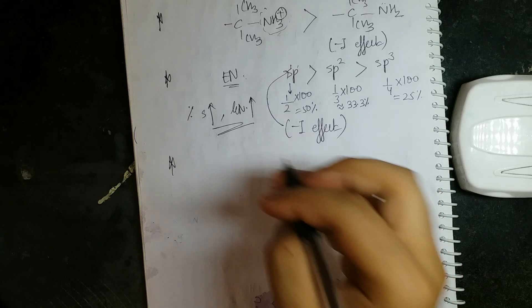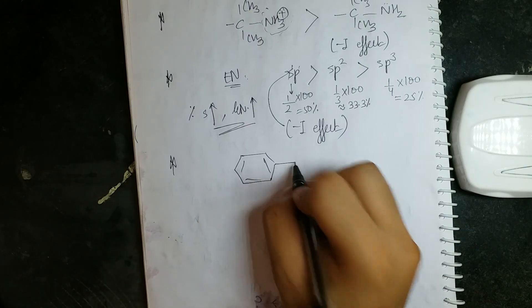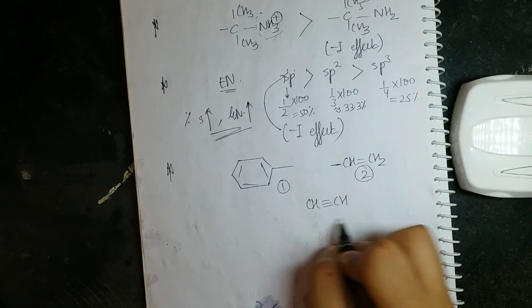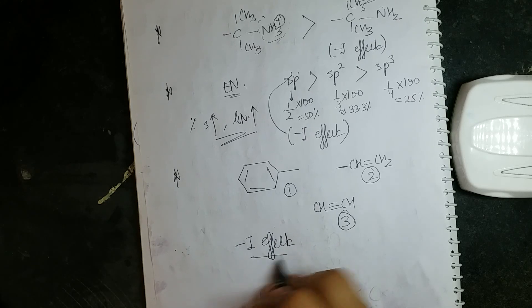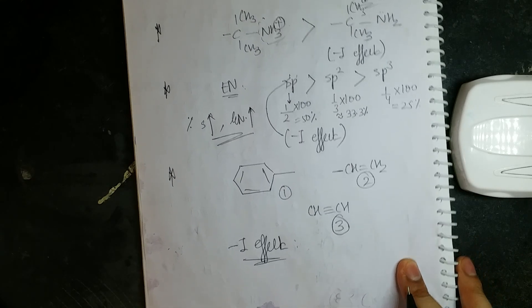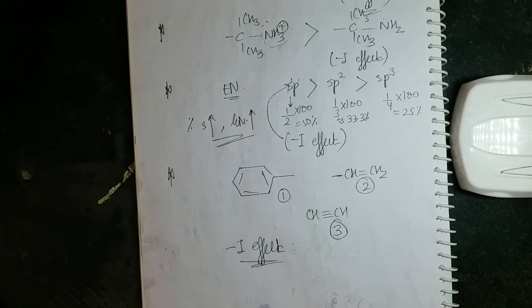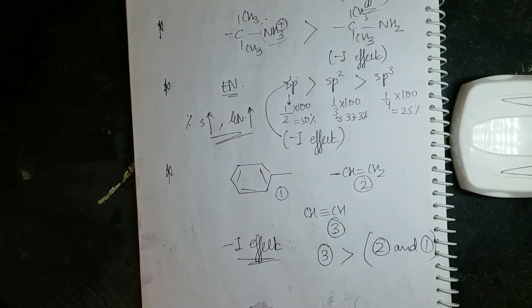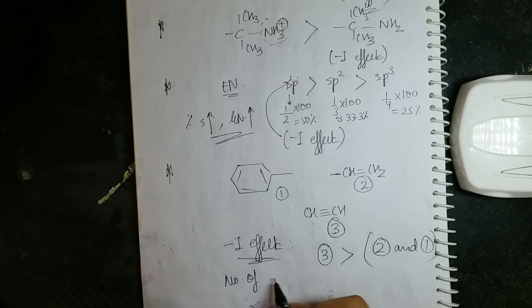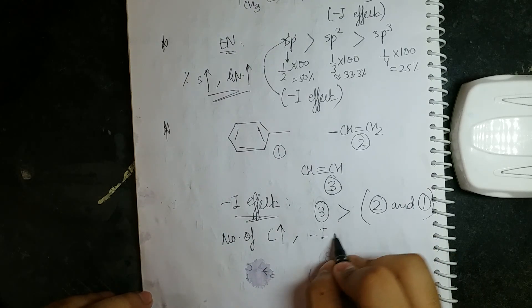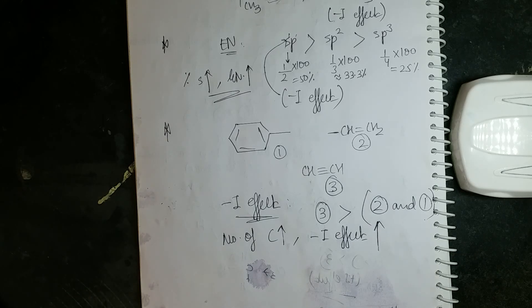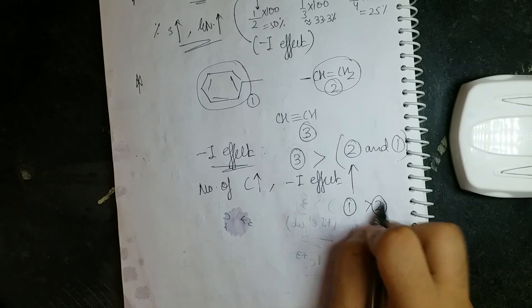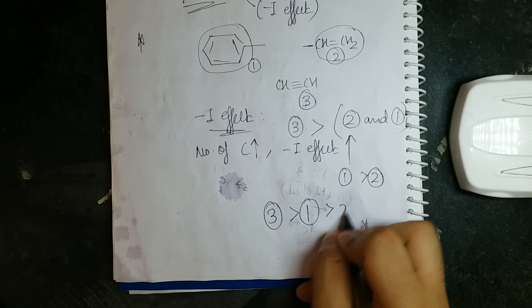Now compare within the same hybridization: a phenyl group (sp2, 6 carbons), a vinyl group (sp2, 2 carbons), and an alkynyl group C≡CH (sp). First, sp3 alkynyl has greater electronegativity than sp2 groups. Between phenyl and vinyl — both sp2 — more carbons increases minus I effect. So phenyl (6 carbons) > vinyl (2 carbons). Final order of minus I effect: alkynyl (sp) > phenyl > vinyl.